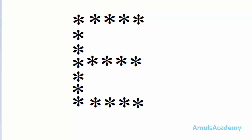Hello guys and welcome to Python programming tutorials by Amuls Academy. Today in this tutorial we are discussing about how to print stars in alphabetical E shape. In the previous tutorials we discussed how to print stars in A, B, C, D shape. The code is similar but we need to modify it a little and we'll get stars in alphabetical E shape. So let's begin with the code.